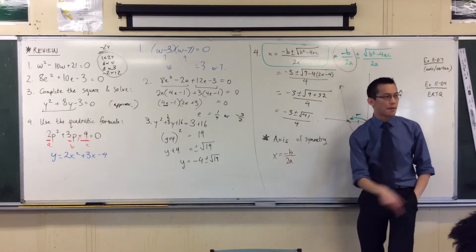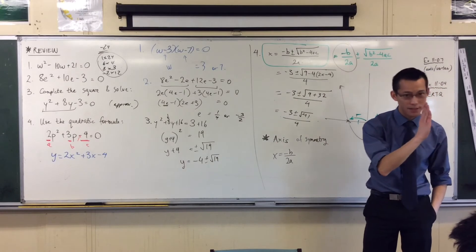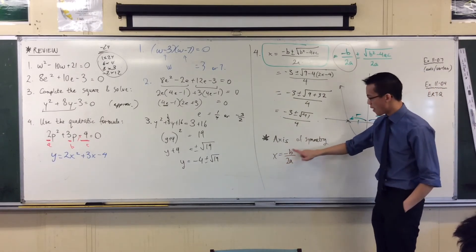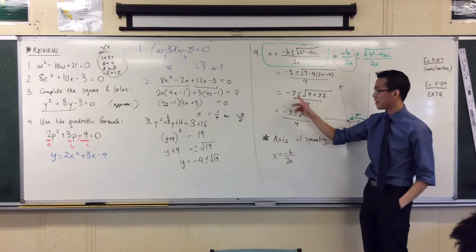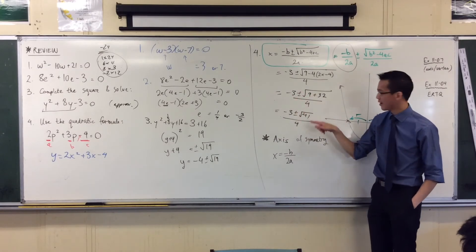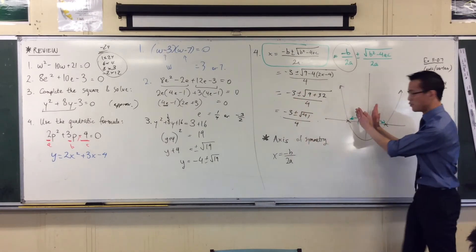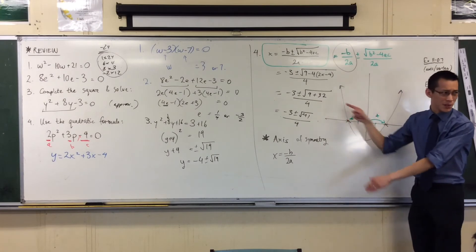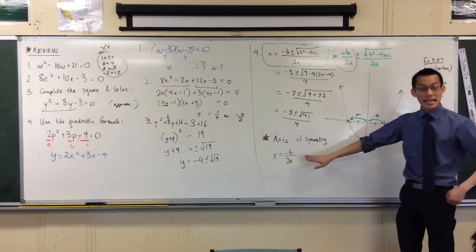where you would find the middle of that graph, the middle of that graph, is when x is equal to minus b on 2a, which we've already found is minus 3 quarters. So this graph is sort of moved over to the left a bit, because minus 3 quarters is over that way. There's the axis of symmetry.